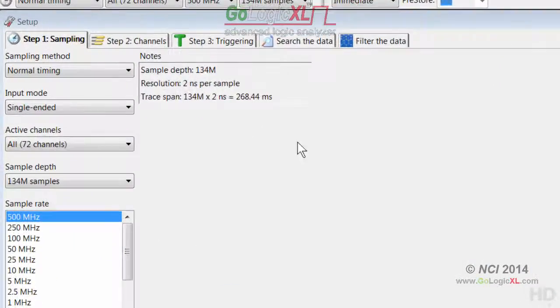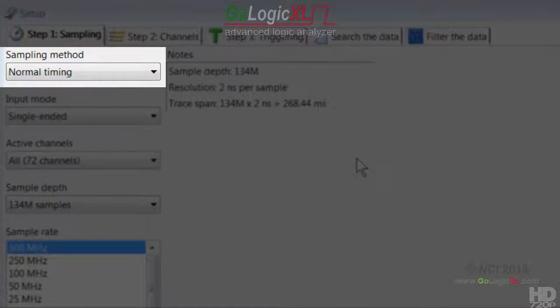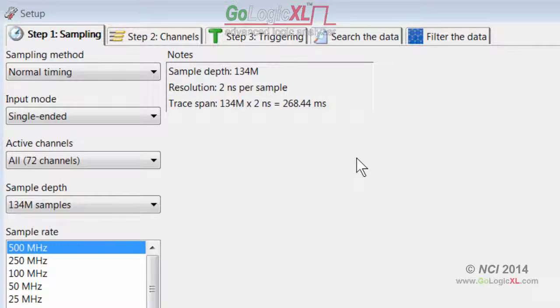The list box in the sampling tab's upper left corner selects the active sampling mode. The sample mode defines how the logic analyzer captures the trace data and should always be selected before any other options.